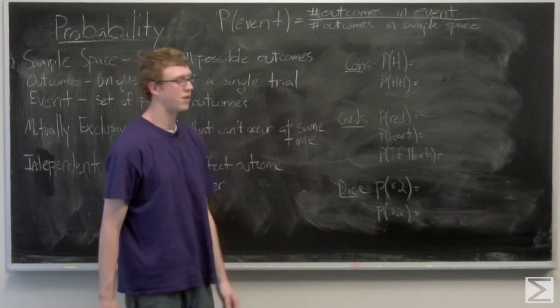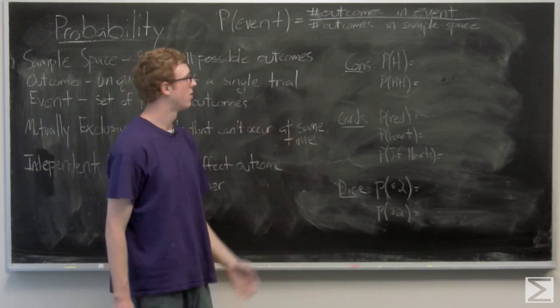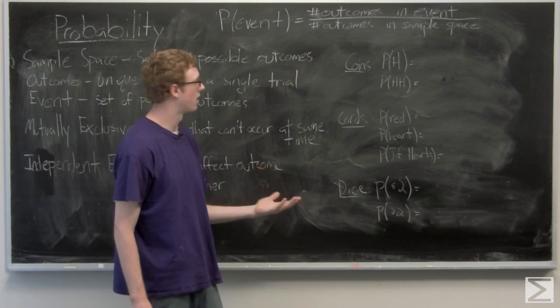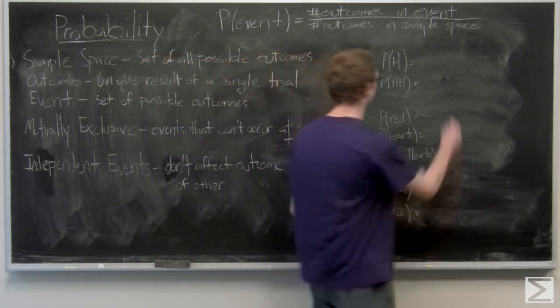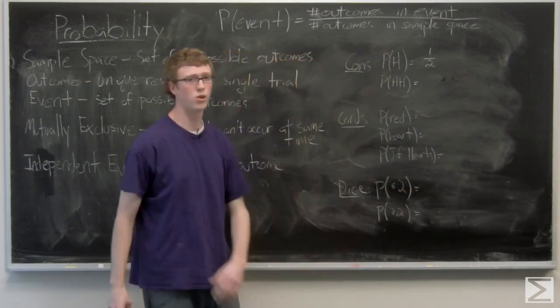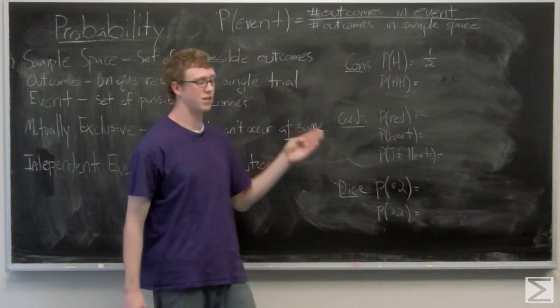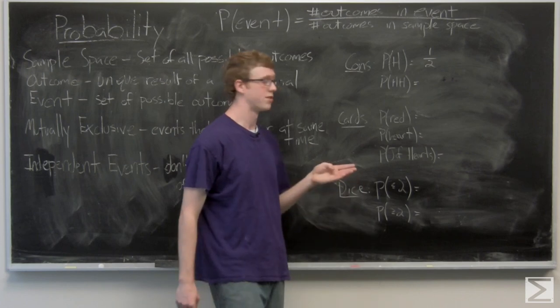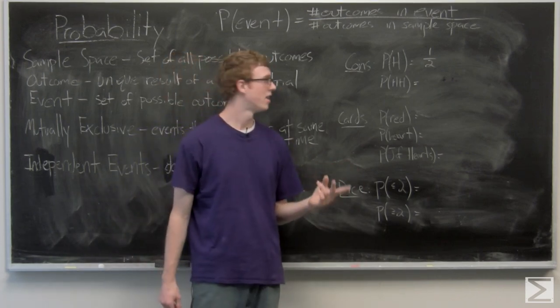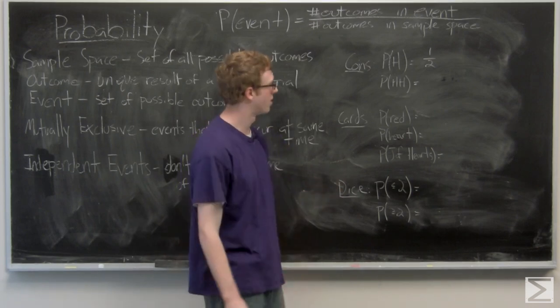We're going to look at coins first, the probability of a heads. Well, there's one head and one tails. So that's one outcome out of two total outcomes. On two coin flips, the probability of getting two heads. Well, there's four different possible outcomes. Two heads, a heads and a tail, a tail and a heads, or two tails. So that's one out of four.